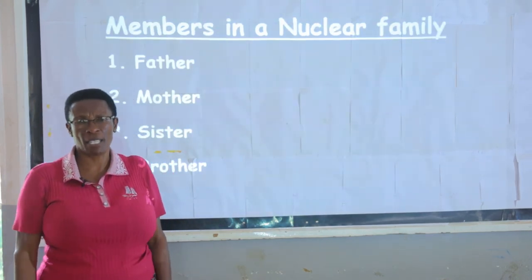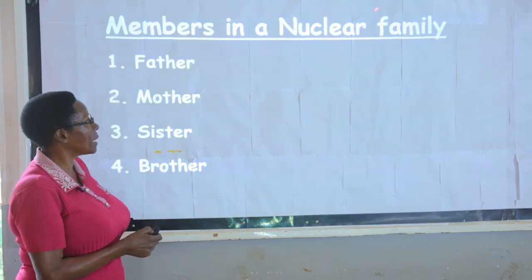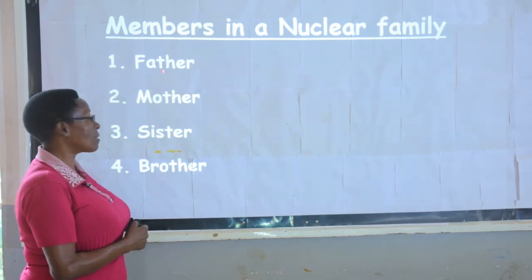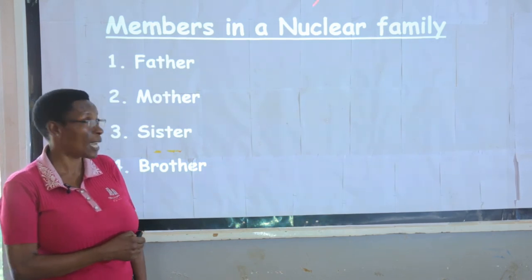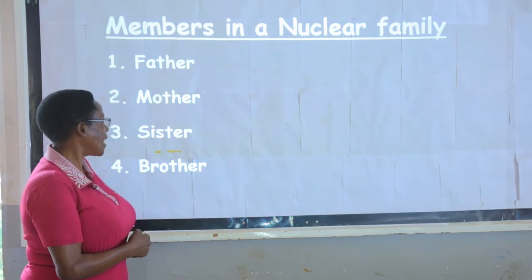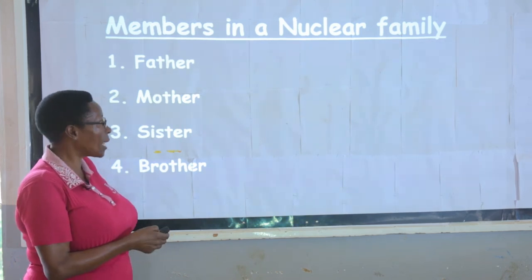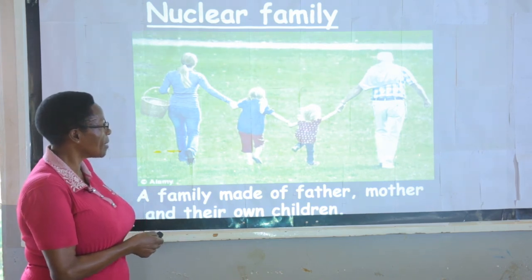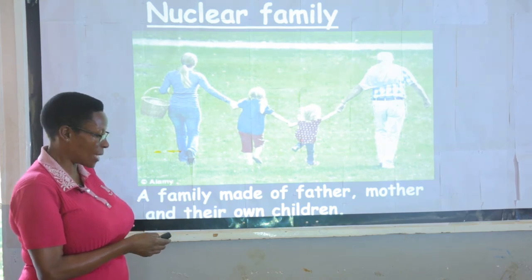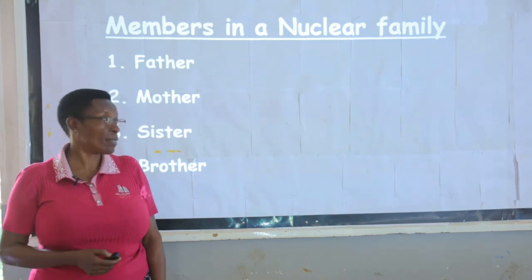Who are the members in the nuclear family? We have already mentioned them. The first one is father, who is the head of the family. Another one is mother — in some families, the mother is the head. Then there are the children: sister and brother. So members in a nuclear family are father, mother, sister, and brother.